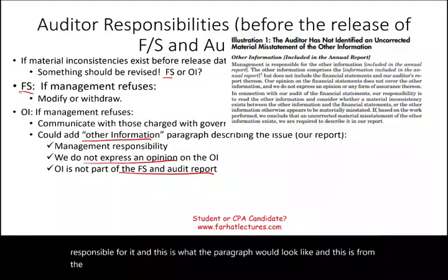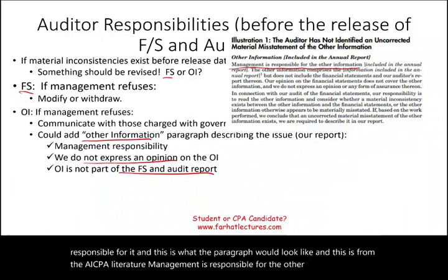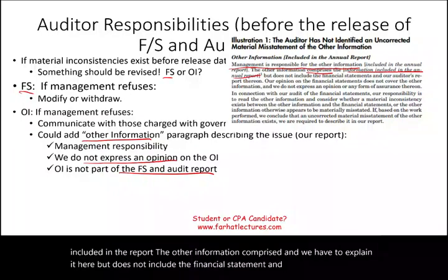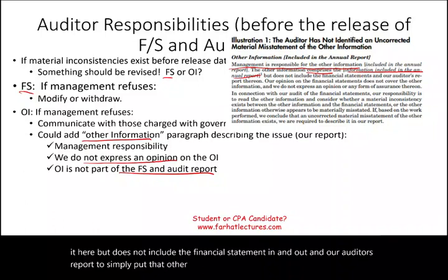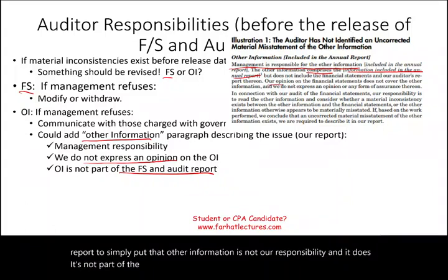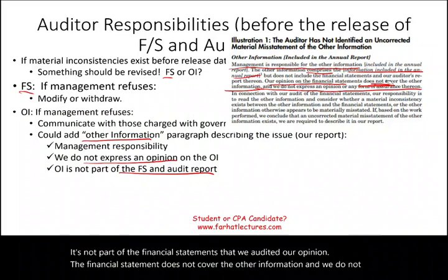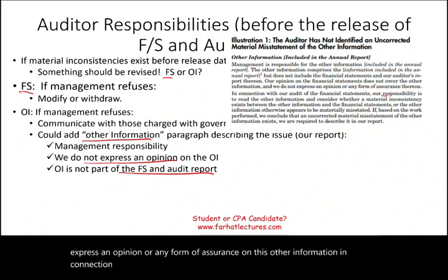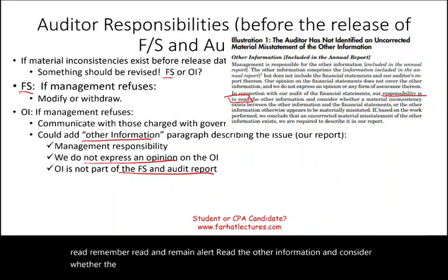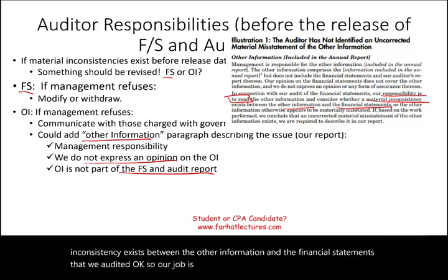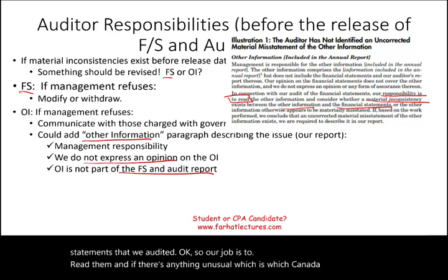From the AICPA literature: management is responsible for the other information included in the report. The other information does not include the financial statements or our auditor's report. Our opinion on the financial statements does not cover the other information, and we do not express an opinion or any form of assurance on it. In connection with our audit, our responsibility is to read the other information and remain alert to whether a material inconsistency exists between the other information and the audited financial statements. Our job is to read it, and if there's anything unusual, let the users know — but we did not audit that information.